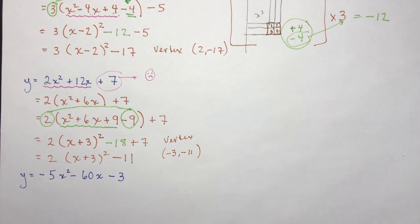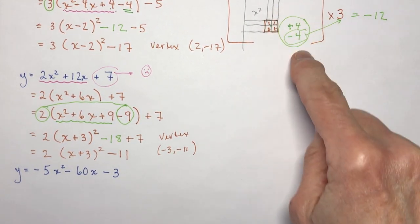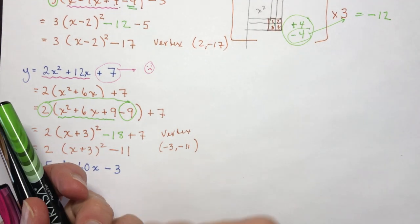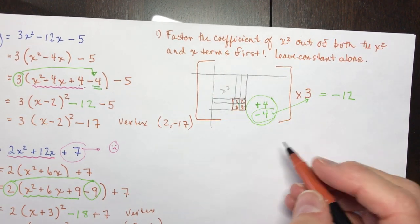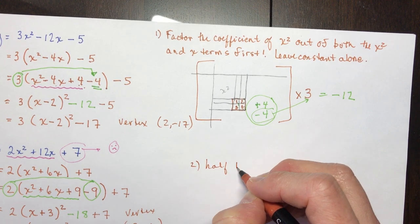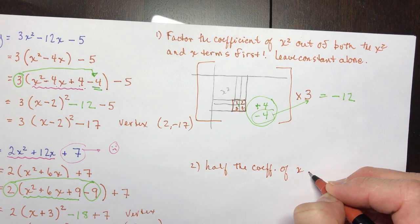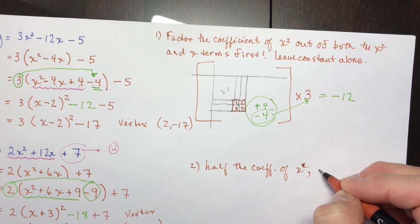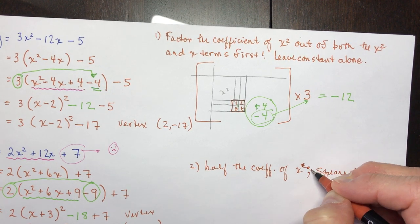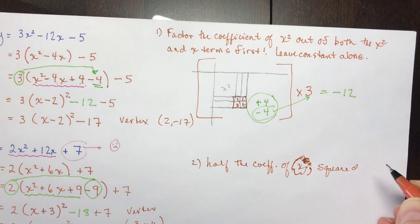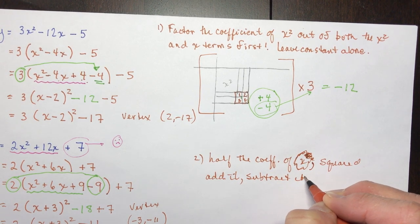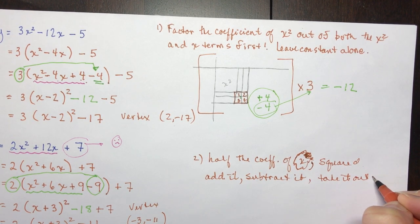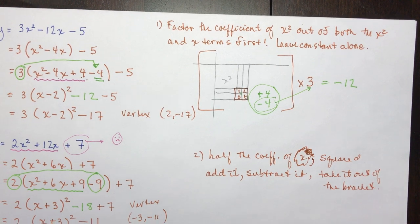We used to have students do ones with all kinds of fractions, and that's when it got more confusing. So let me just put some words to go with this and then we'll do the last one. Factor the coefficient of x squared out of both the x squared and x terms first, leave the constant alone. Then: half the coefficient of x, squared, add it, subtract it, take it out of the bracket.